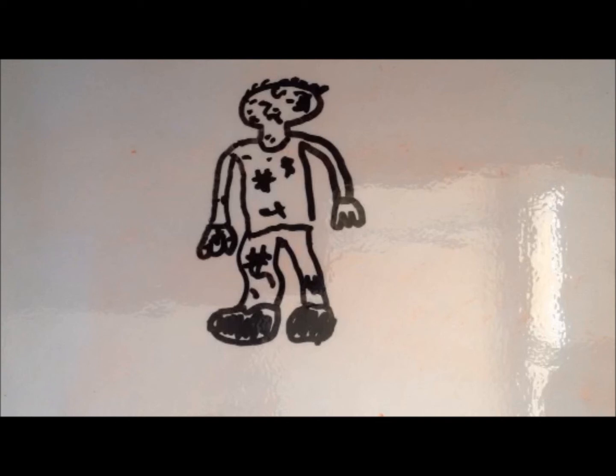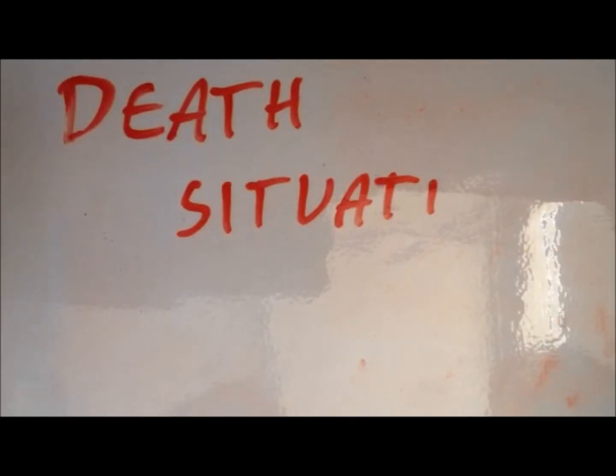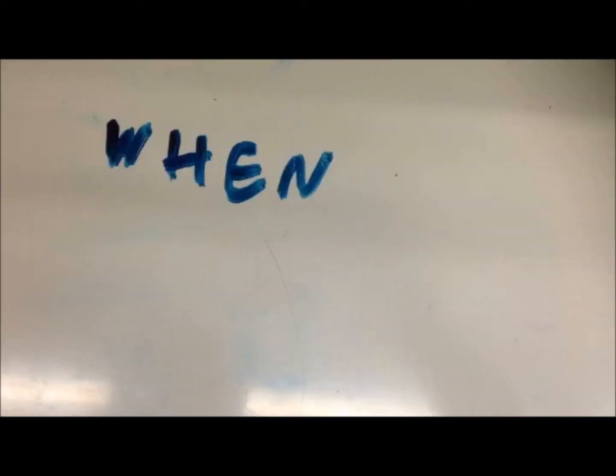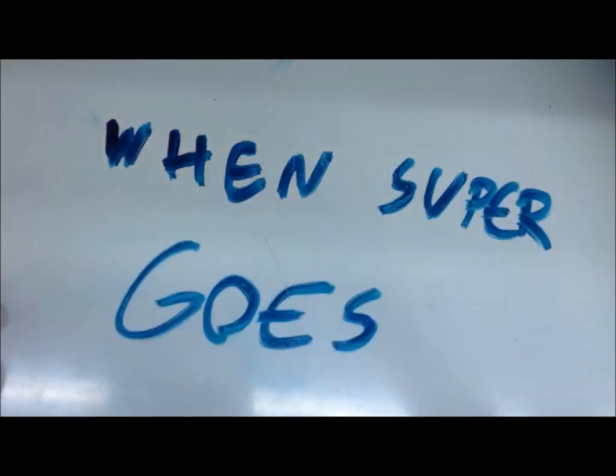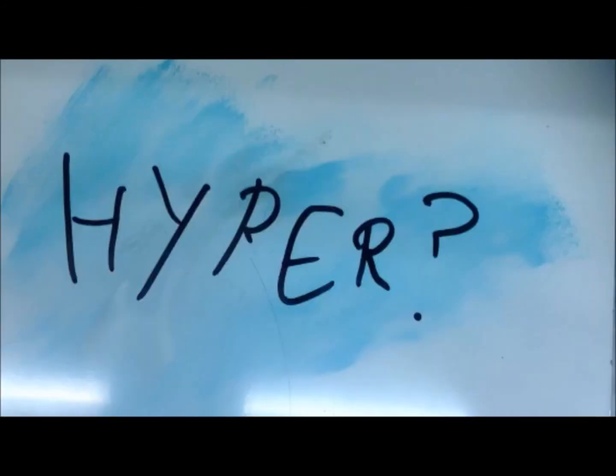But what happens when this is a bit worse? Now this is death situation number four, our last death situation. When super goes hyper. It's called a hypernova. So this is a really big star, and it was born so large that its fusion process eats up all its hydrogen way too quick.